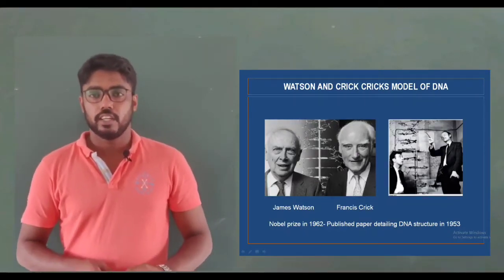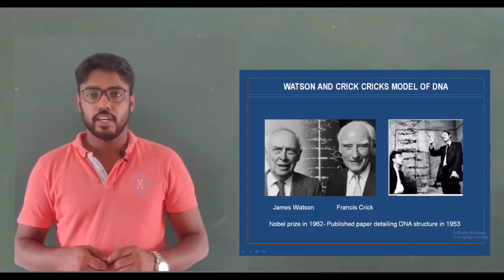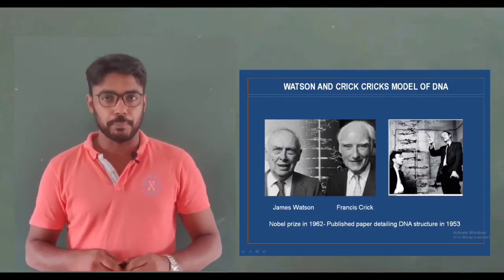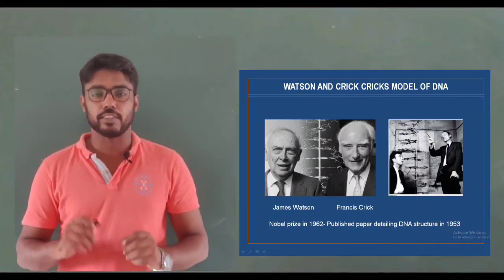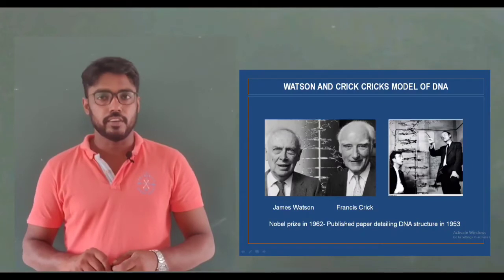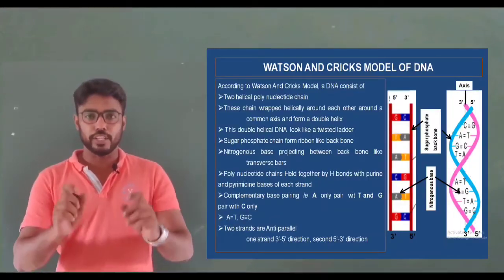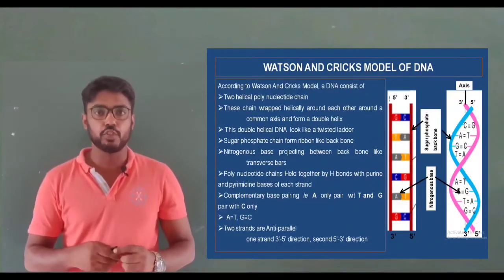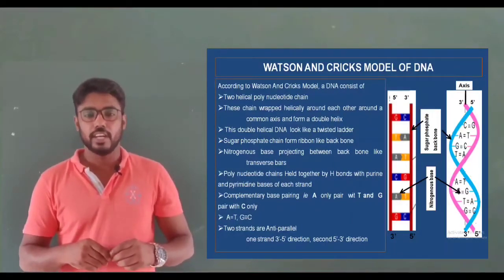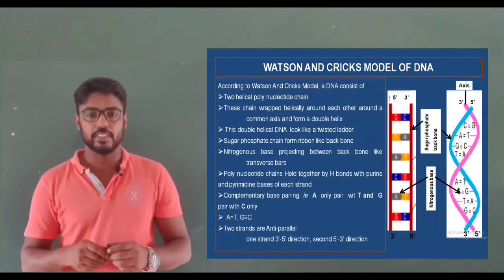Now we come to the structure of DNA. A number of scientists studied the structure of DNA. In 1953, two scientists, James Watson and Francis Crick, published a paper detailing the structure of DNA, and for this finding they received the Nobel Prize in 1962. According to the Watson and Crick model, DNA consists of two polynucleotide chains wrapped helically around each other around a central axis, forming a double helical structure. This double helical structure looks like a ladder, where the sugar-phosphate groups form the backbone and nitrogenous bases form the rungs.